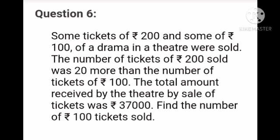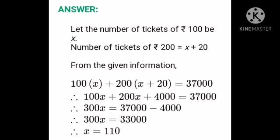Question number 6: Some tickets of Rs. 200 and some of Rs. 100 of a drama in a theatre were sold. The number of tickets of Rs. 200 sold was 20 more than the number of tickets of Rs. 100. The total amount received by the theatre by sale of tickets was Rs. 37,000. Find the number of Rs. 100 tickets sold. Let the number of tickets of Rs. 100 be x. Number of tickets of Rs. 200 is equal to x plus 20.